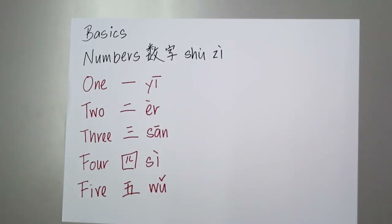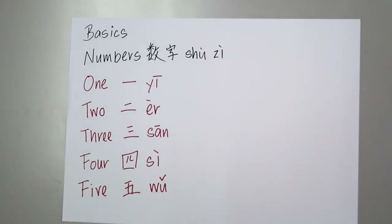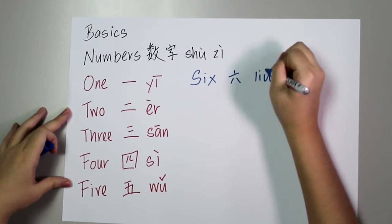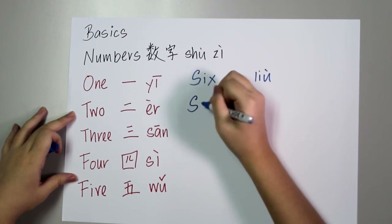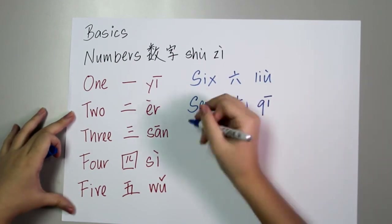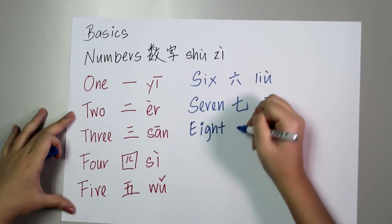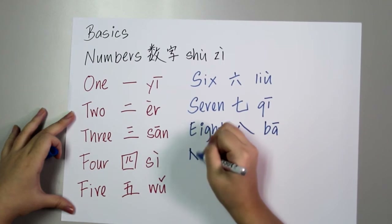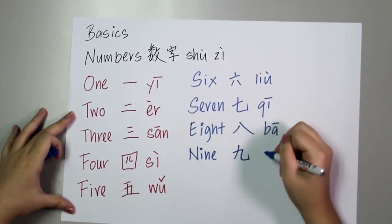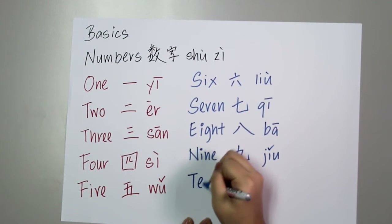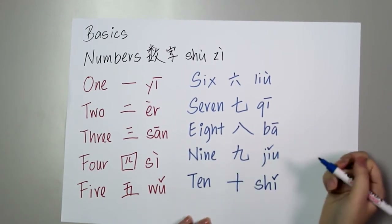Now we proceed to six. Six is pronounced as liu. For seven, seven is pronounced as qi. Eight is pronounced as ba. And nine, we pronounce as jiu. Finally, ten — we pronounce as shi.